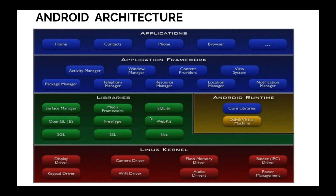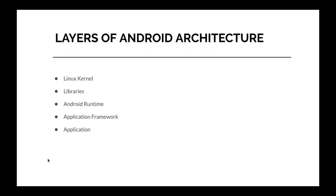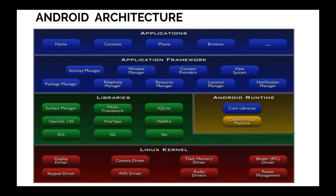On top of that we have something called libraries. These libraries are made for specific purposes — for example, the SQLite library is mainly for databases, where data usually gets stored on the phone in a SQLite database. SSL would be for security. Then there are other things like OpenGL, SGL, and media frameworks. These are for different specific purposes, something like the UI/UX. How the user interface or user experience is taken care of — for that we have different sets of libraries.